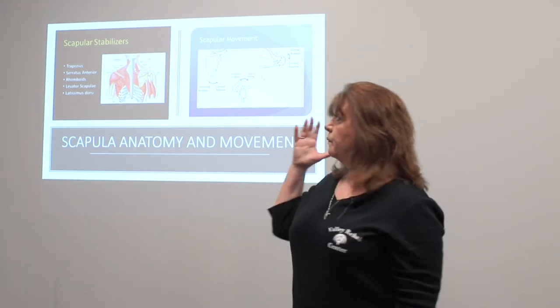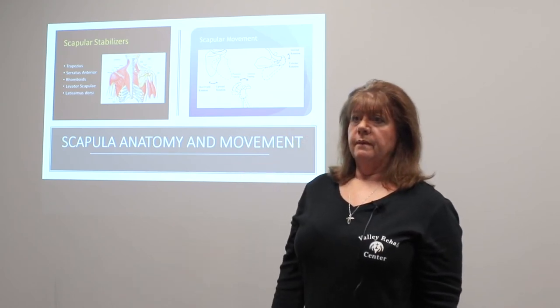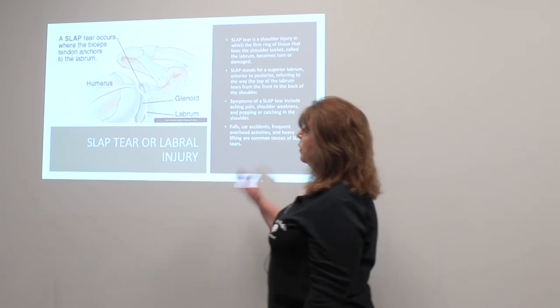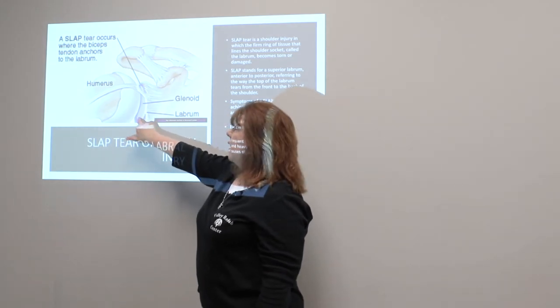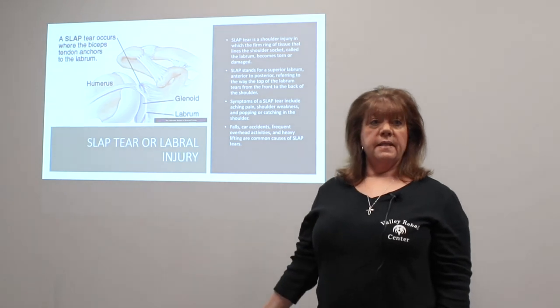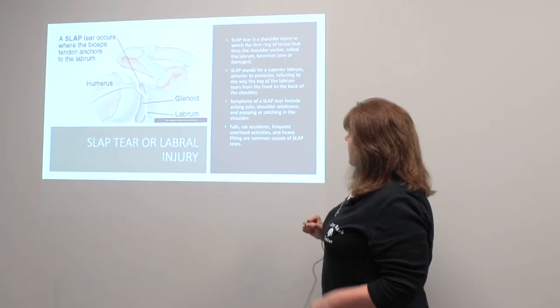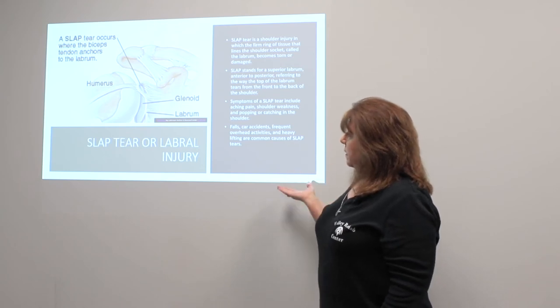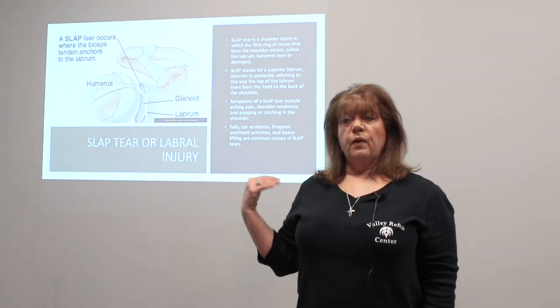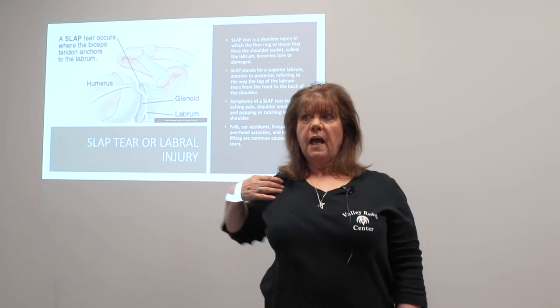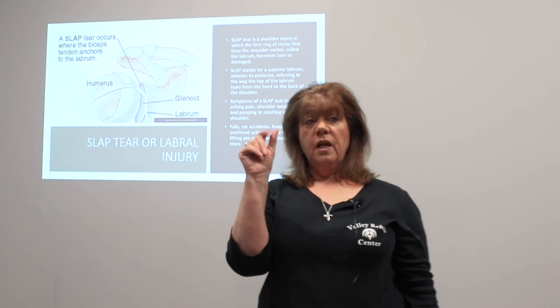A SLAP tear usually occurs from a traumatic injury. You get an actual rotator cuff tear, a labral injury — which is damage to the cartilage — and sometimes a biceps rupture as well, because all those structures intermingle right in that area. These usually occur with falls, car accidents where you hit the steering wheel, or heavy lifting. A SLAP tear usually requires surgery. People with a SLAP tear often complain of feeling a block when they reach across or reach up — something is there — but if they move around it they can get past it, because a piece of torn cartilage is blocking the motion.